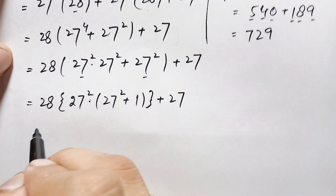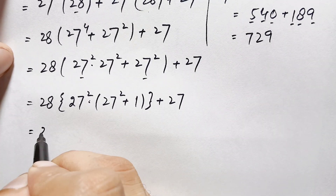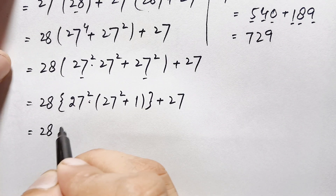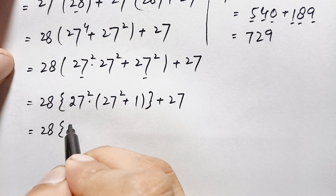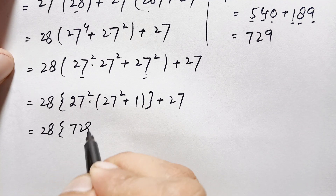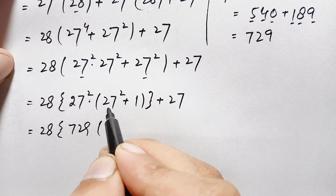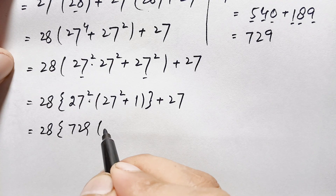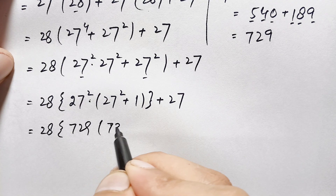So 27 squared equals 729. Substituting this in, we get 28 times 729 plus 1, which is 730, plus 27. This simplifies our expression to 28 times 730 plus 27.